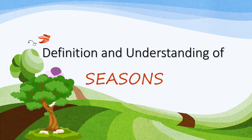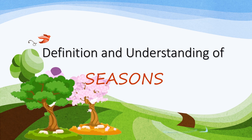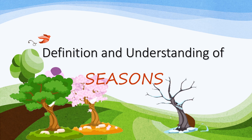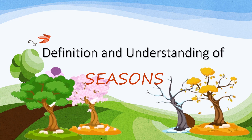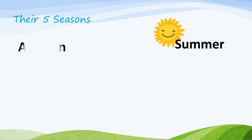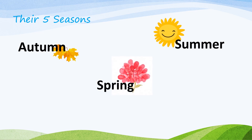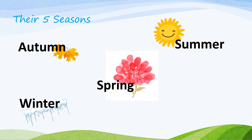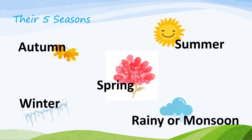Definition and understanding of seasons. There are five seasons: Summer, Autumn, Spring, Winter, and Rainy or Monsoon.